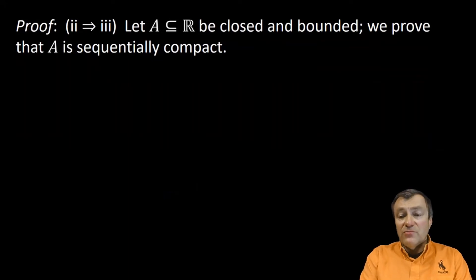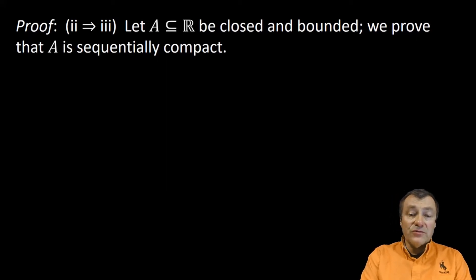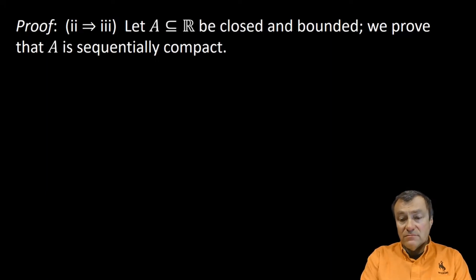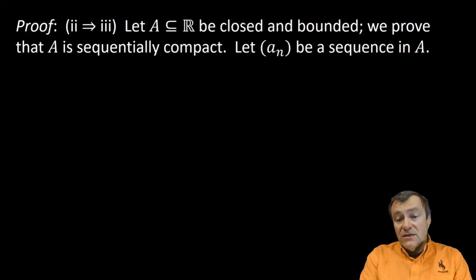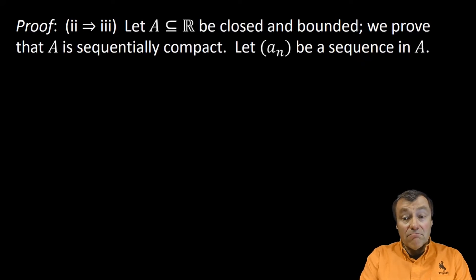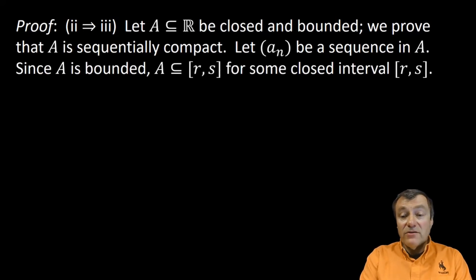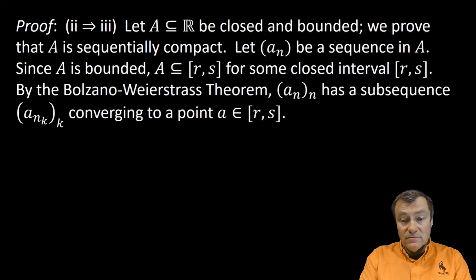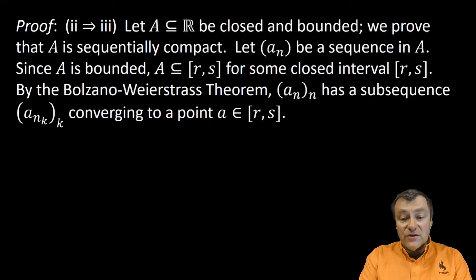Let's proceed with our proof that 2 implies 3. Here, we assume that the set A is closed and bounded. We need to prove that A is sequentially compact. Recall what this means: given any sequence of points AN in capital A, we have to show that this sequence has a convergent subsequence in capital A. Since A is bounded, it has a lower bound R and an upper bound S. By the Bolzano-Weierstrass theorem, our sequence AN has a subsequence converging to a point little a in the closed interval RS.